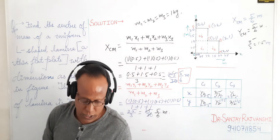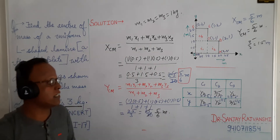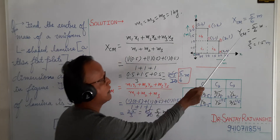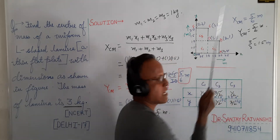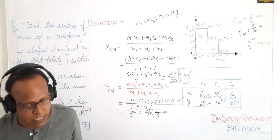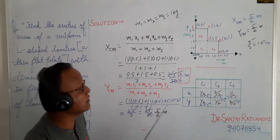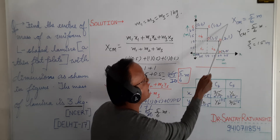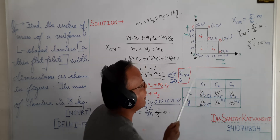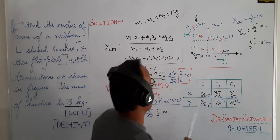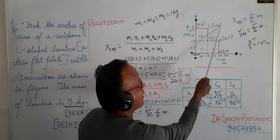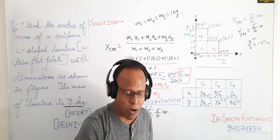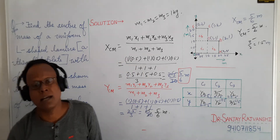So we have both center of mass coordinates. Clearly, the center of mass of this L-shaped lamina is (5/6, 5/6). This lies on the line of symmetry of OCD. This is your position of the center of mass. Please subscribe and check.